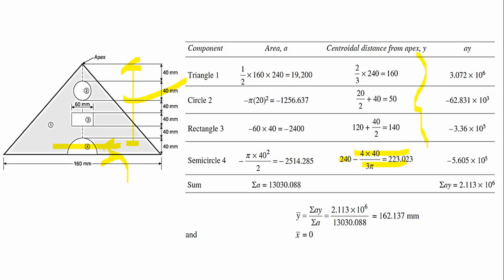With all y-values computed, we multiply each area by its y-distance to get AY for each figure, then compute ΣAY. The y-bar is then: ȳ = ΣAY / ΣA. Substituting the values gives ȳ = 162.137 mm. This is how we calculate the centroid of this composite figure with respect to the apex.